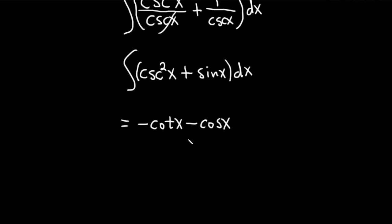And you can check this, and you probably should. So the derivative of cotangent is negative cosecant squared, but we already have a negative here. So two negatives become a positive. All is good.